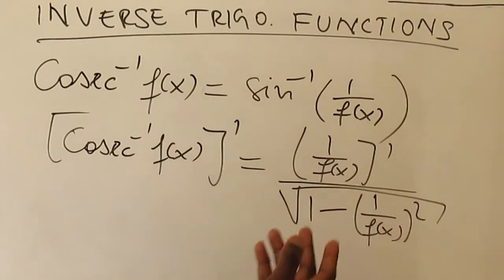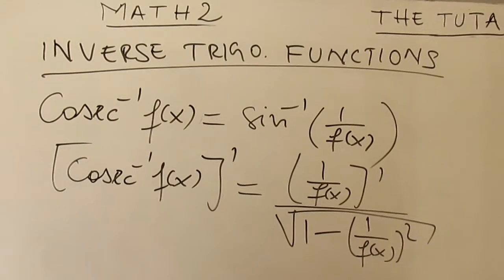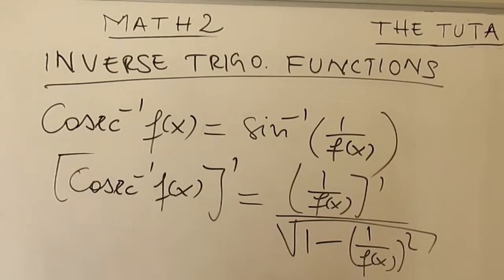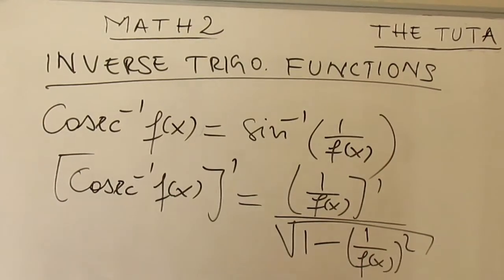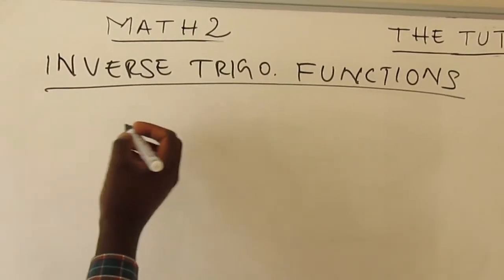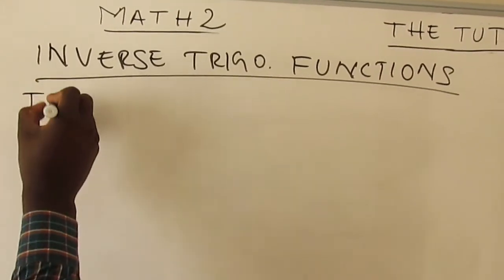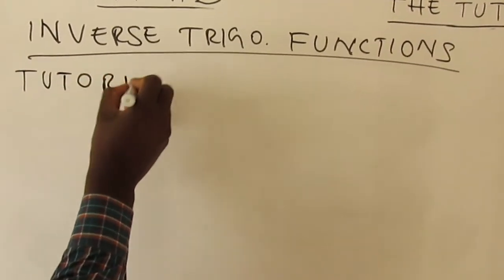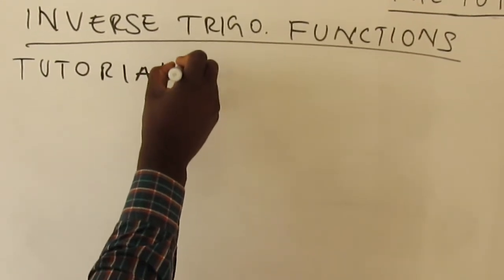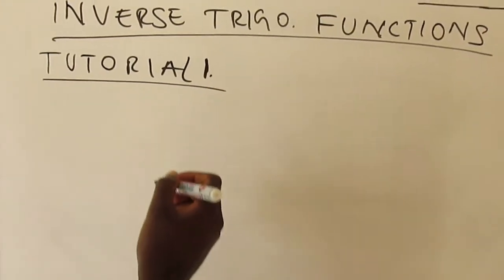So now I've given you all the formulas. We can illustrate everything with some examples. Let's take an example from your tutorial — refer to Tutorial 1. This is just to illustrate all these formulas we've just seen.